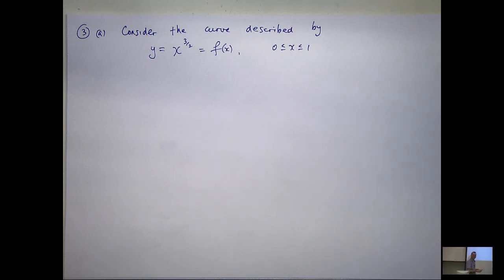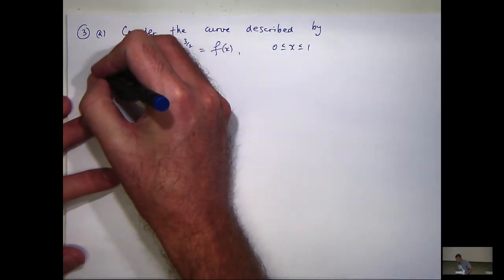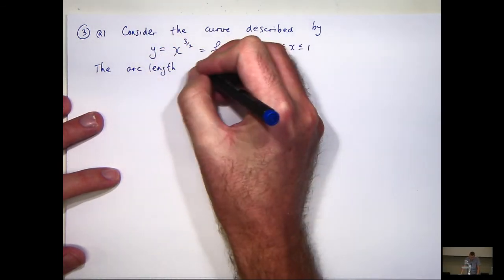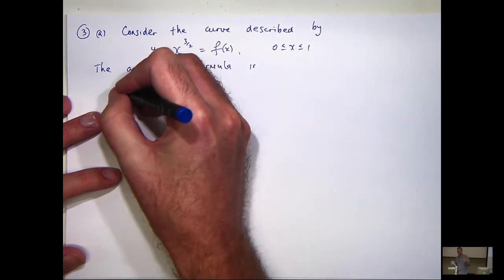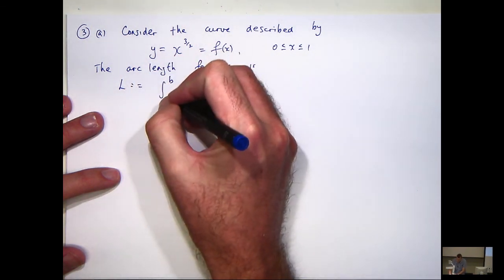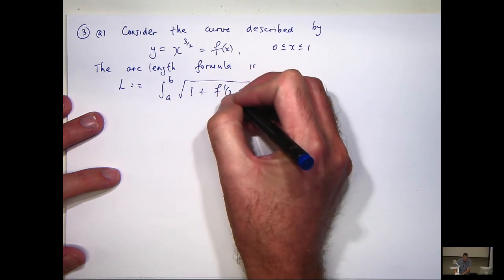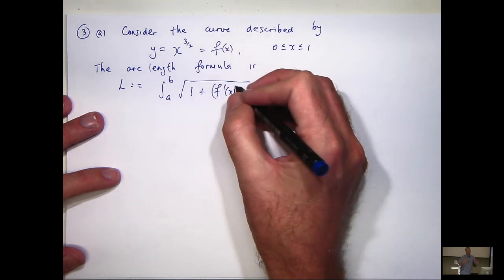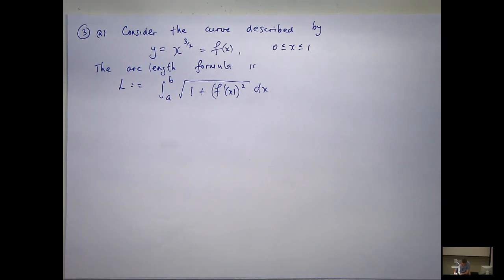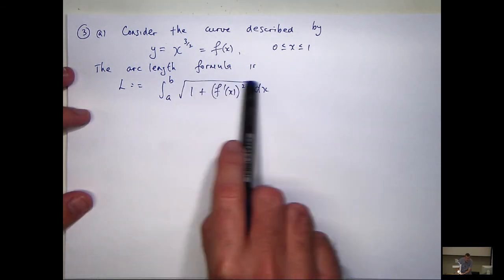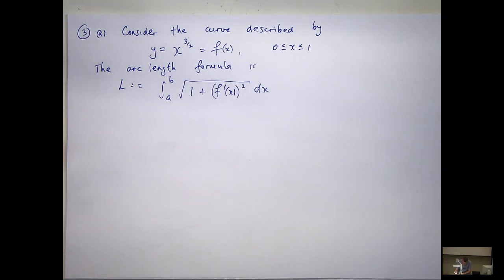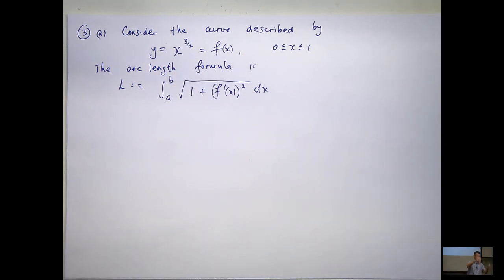Geometrically it's triangles — it's Pythagoras' theorem. That's the basic way to remember the arc length formula. So I'm going to let L denote the arc length. By f′ I mean df/dx. The challenge in many cases with the computation is to manage the square root sign away. Sometimes it's easy, sometimes it's more difficult.